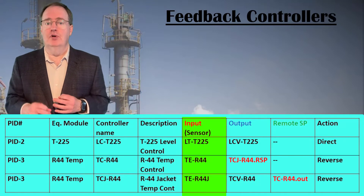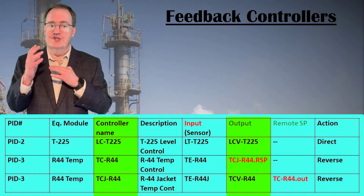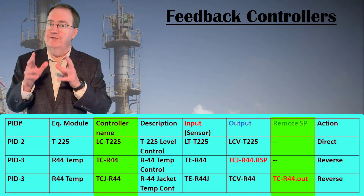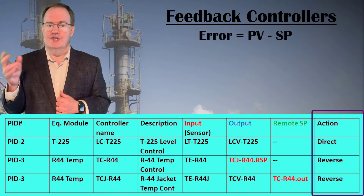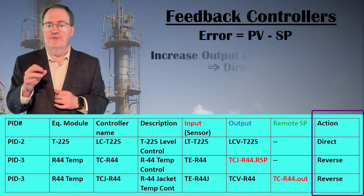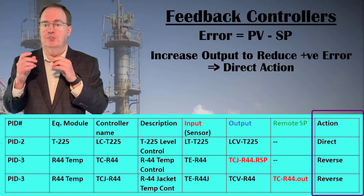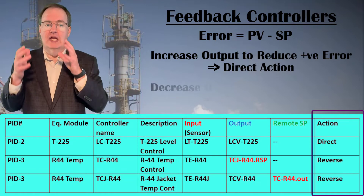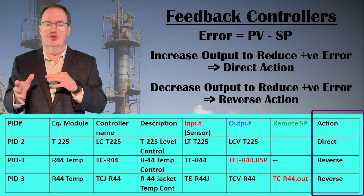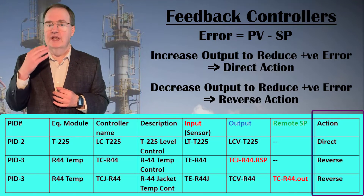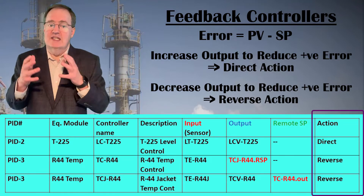Feedback controllers combine an analog input for the process variable, an analog output for the manipulated variable, and a controller which has its own tag name. If the controller is a subordinate controller receiving a remote set point in a cascade arrangement, identify that here. You must also specify the action of the controller. To define action, we need to define the error, which is the process variable minus the set point target. The action is defined as the direction we wish to move the output relative to the loop error. If positive error requires a positive output change, the action is direct. If the required output move to a positive error is negative, the action is reverse. For example, if a flow controller's measured flow is above the set point, the error is positive and we want the valve to close — making this a reverse acting controller.